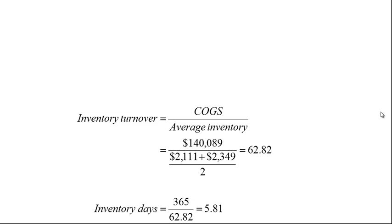How do you calculate inventory days? You start by calculating inventory turnover, which is cost of goods sold divided by average inventory. I had inventory for both 2014 and 2015 so I can average those two figures. Doing this calculation gives an inventory turnover of 62.82 — meaning Apple essentially empties and refills its inventory about 62 to 63 times a year. To convert this into days, you take 365 and divide by inventory turnover, which gives 5.81 days — a very short time for inventory to sit in Apple's warehouse.